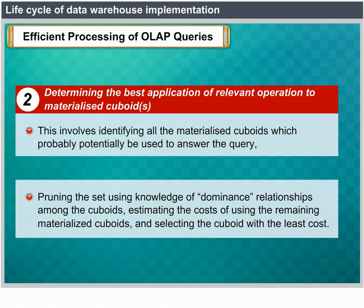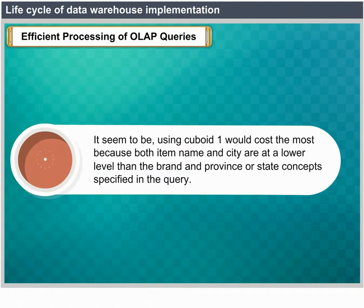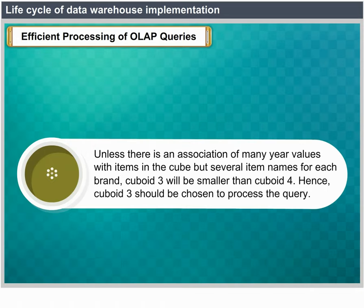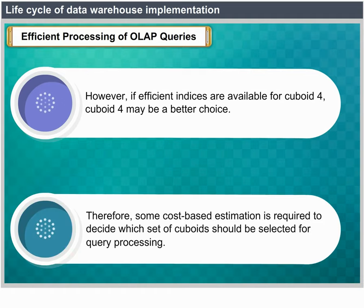Comparing cuboid costs: using cuboid 1 would cost the most because both item name and city are at a lower level than the brand and province or state concept specified in the query. If there are not many values associated with items but there are several item names for each brand, then cube 3 will be smaller than cube 4, and thus cube 3 should be chosen. However, if efficient indices are available for cube 4, then cube 4 may be a better choice. Therefore, some cost-based estimate is required to decide which set of cuboids should be selected for query processing.